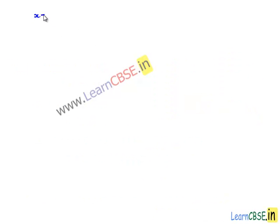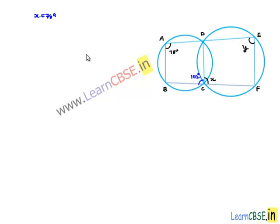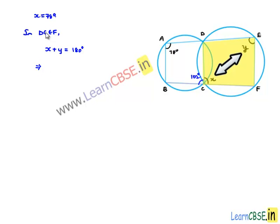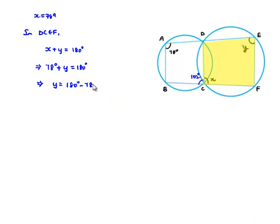This implies angle DCF, which is x, equals 180 minus 102 degrees, so x equals 78 degrees. Now considering the cyclic quadrilateral DCFE, the sum of opposite angles is 180 degrees. Therefore, x plus y equals 180 degrees, and since x is 78 degrees, y equals 180 minus 78, which is 102 degrees.